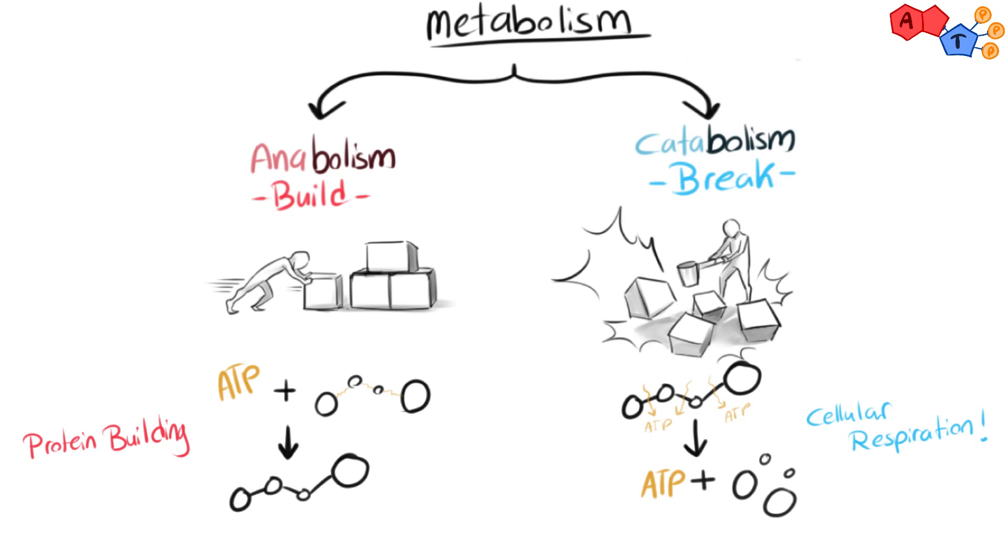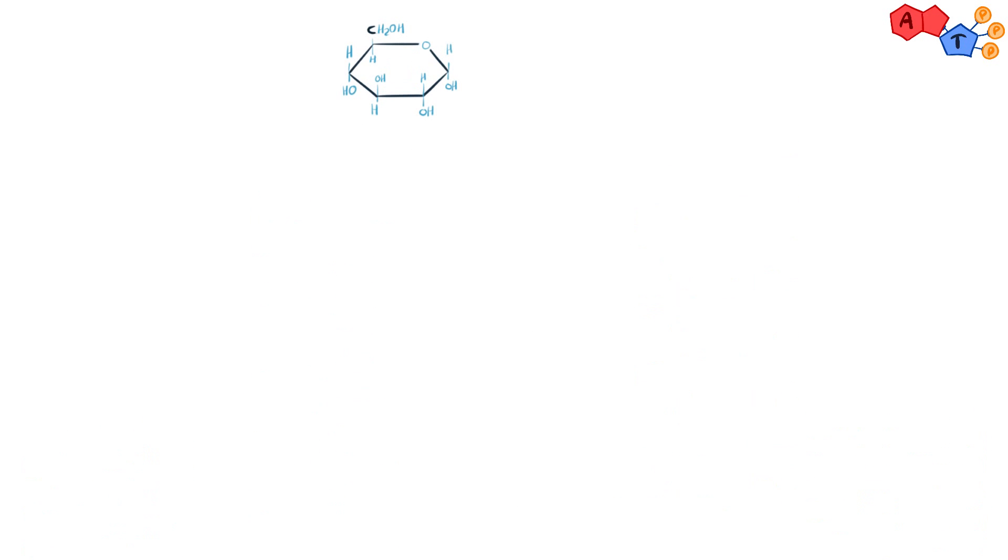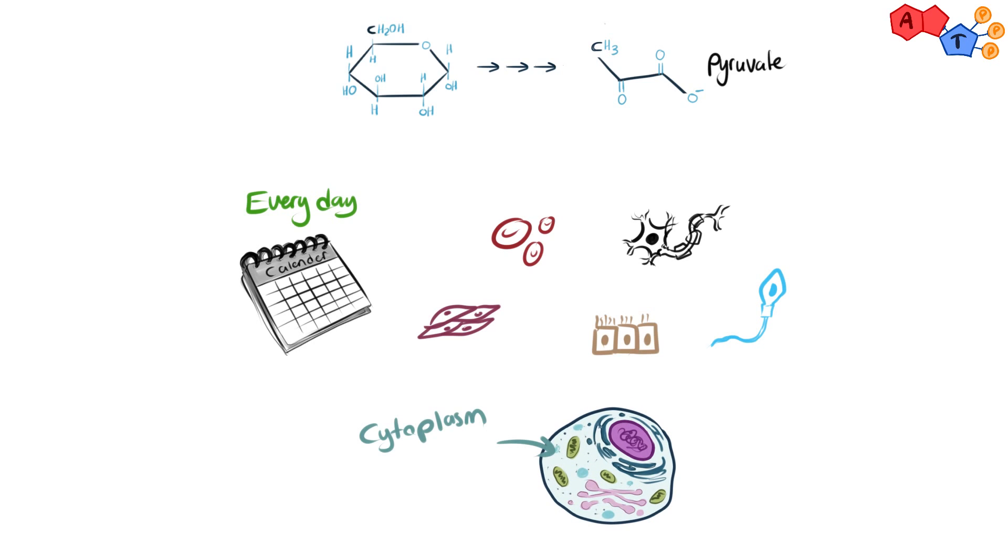So, what happens in glycolysis? Our cells break down sugar, known as glucose, which is a six-carbon molecule, into a three-carbon energy-rich molecule called pyruvate or pyruvic acid. This process happens every day in all of our cell's cytoplasm, while the other two stages of cellular respiration take place in the cell's mitochondria. Cells without mitochondria, such as red blood cells, rely solely on glycolysis to produce energy.